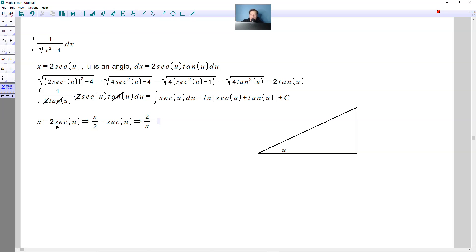in other words the cosine function, cosine of u. Because cosine is 2 over x, it's got to be that the horizontal leg is 2, the hypotenuse is x, which means by the Pythagorean theorem that the vertical side would be the square root of x squared minus 4.